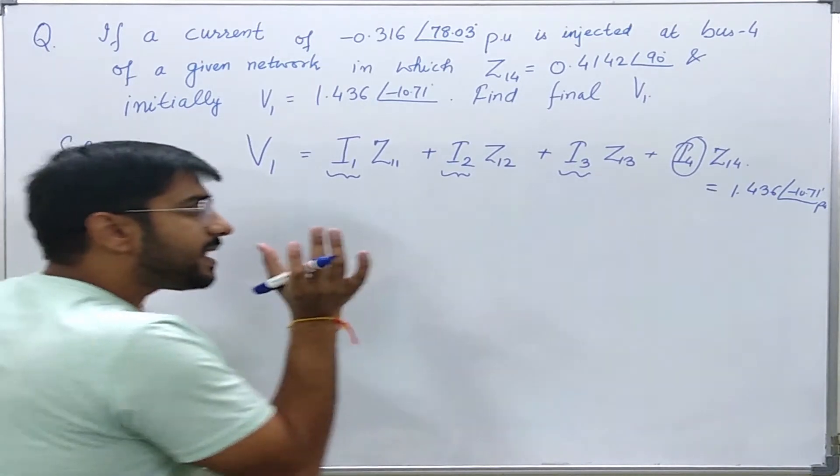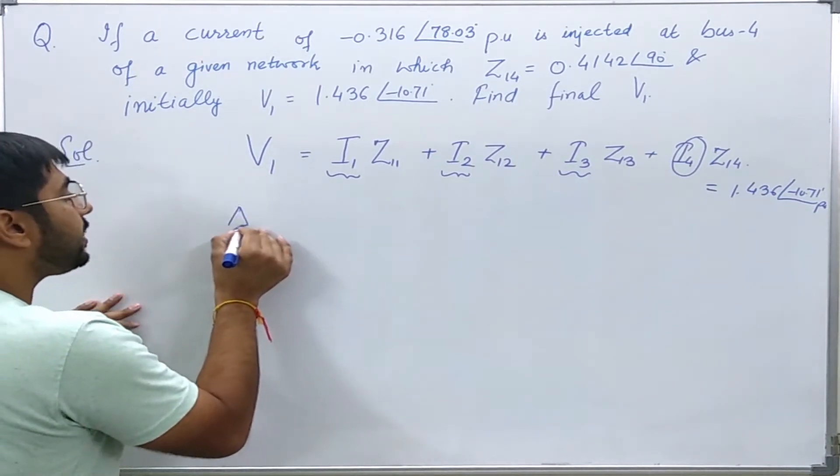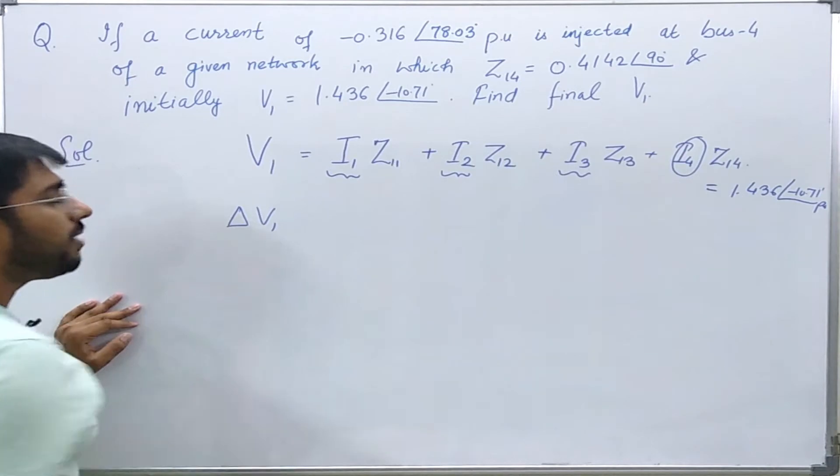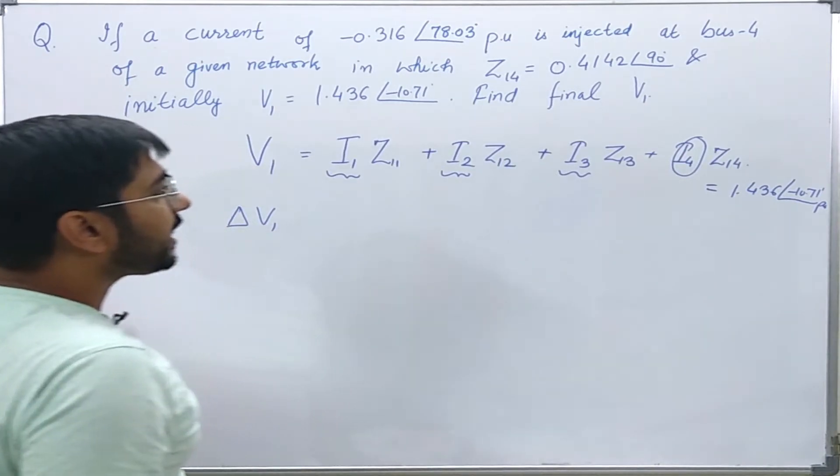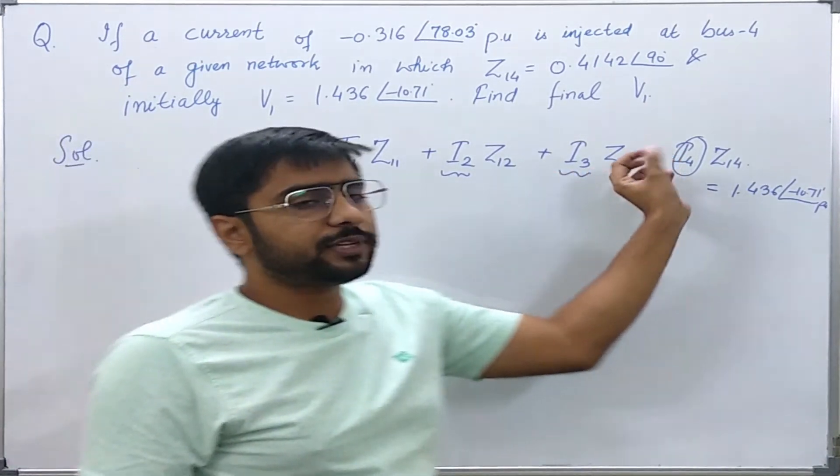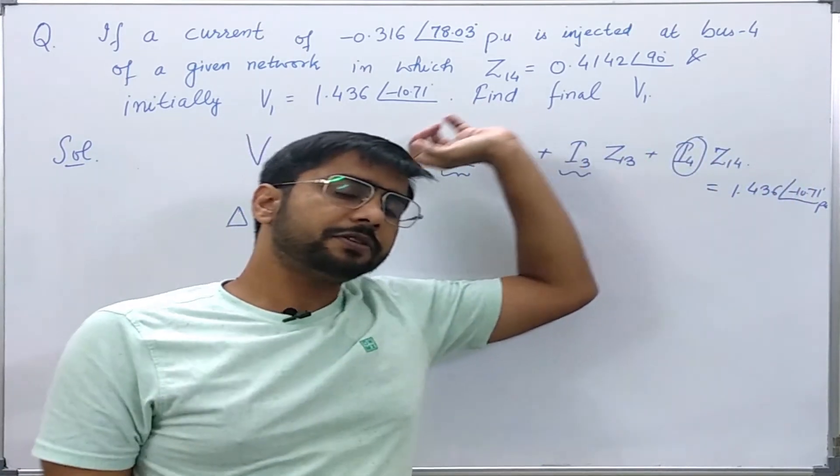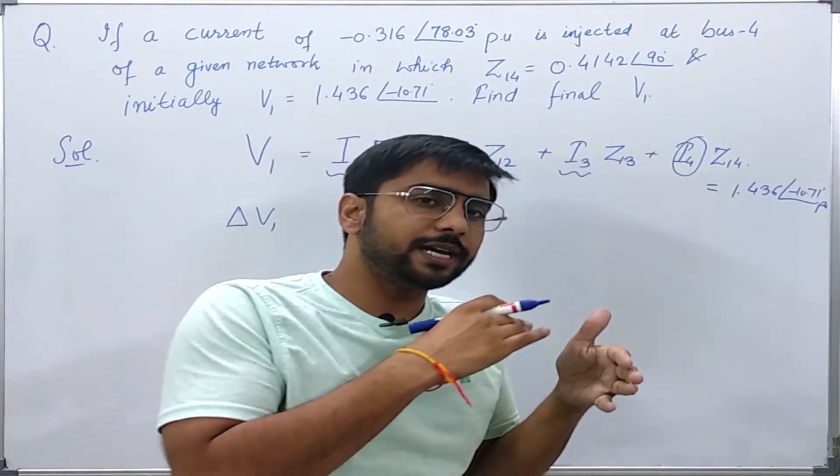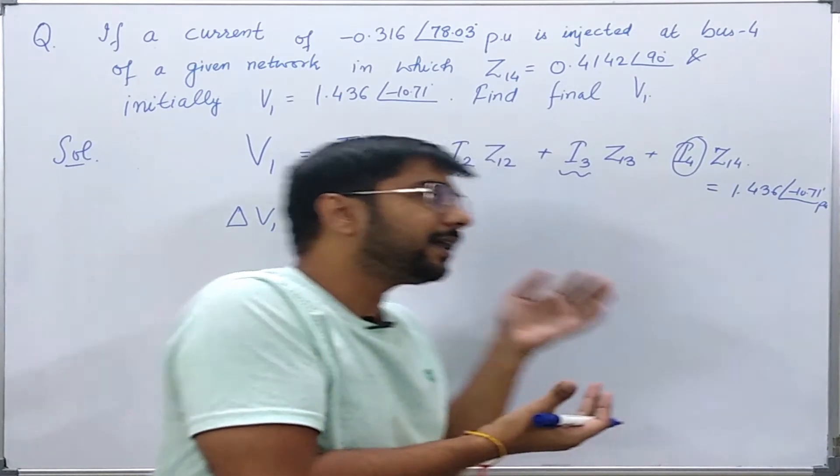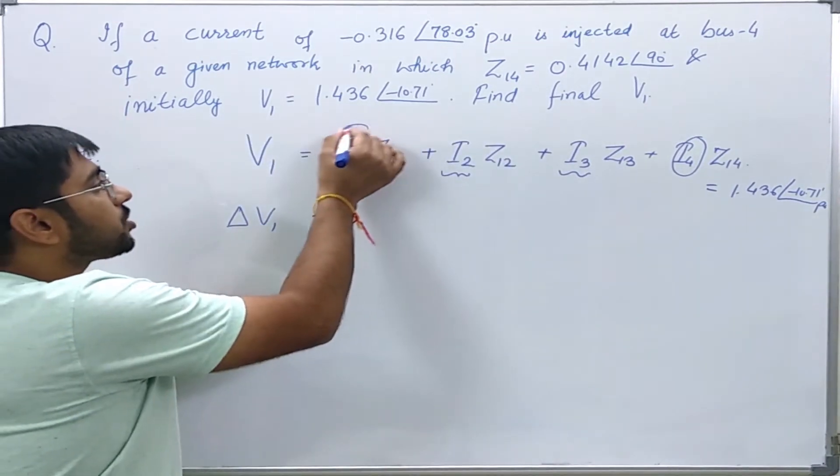To find this delta change or delta V, what I can do is just see the effect of this current source on the voltage of bus 1, which is nothing but, if I deactivate all other sources.